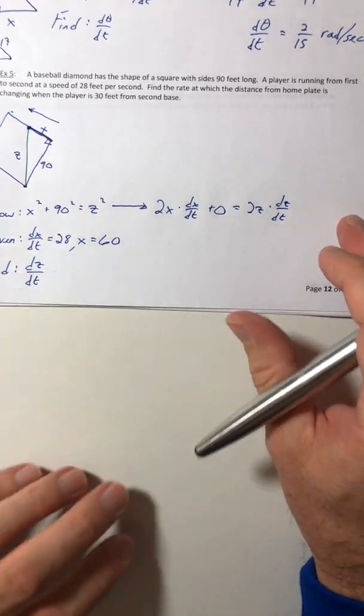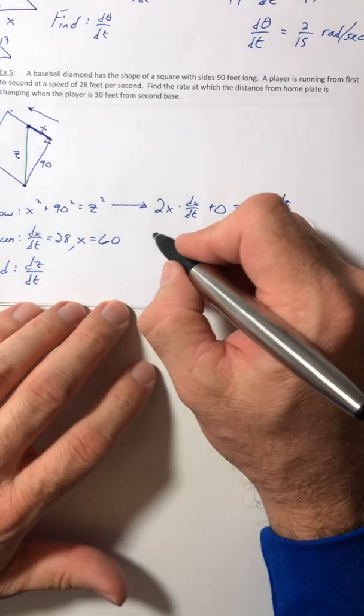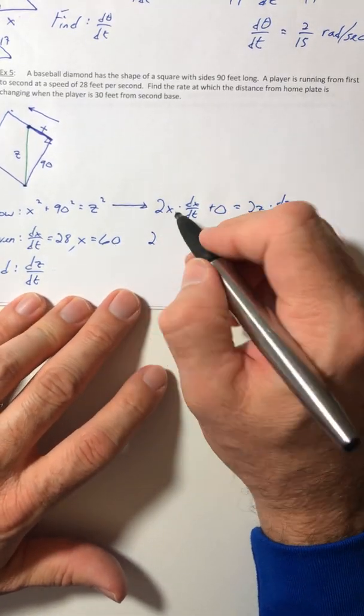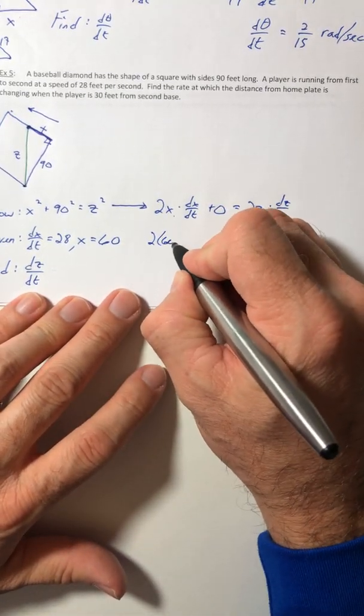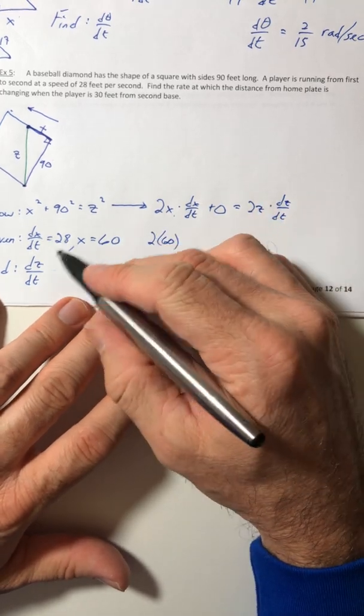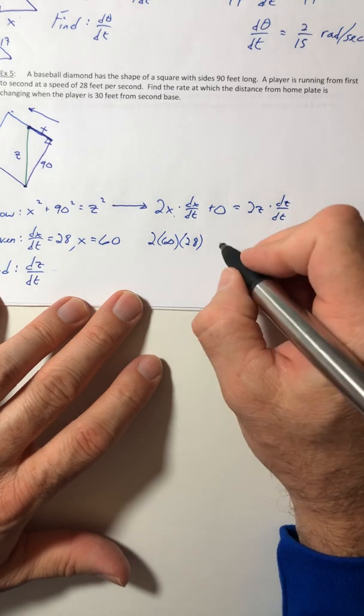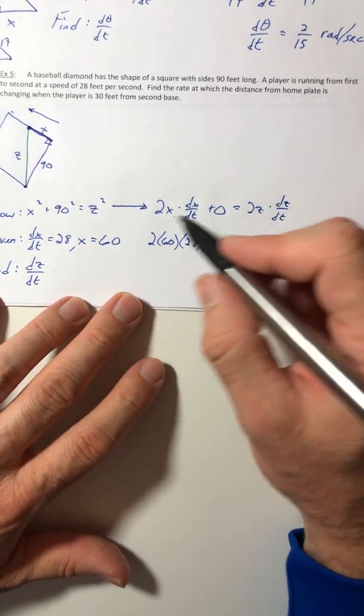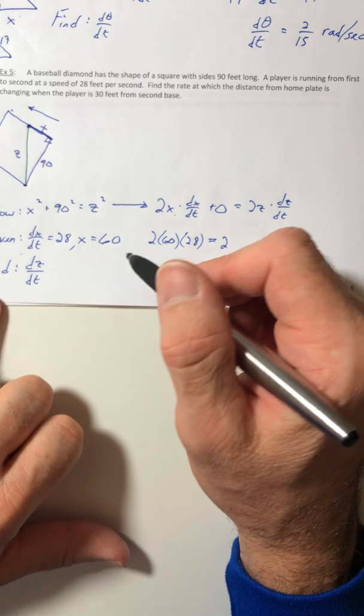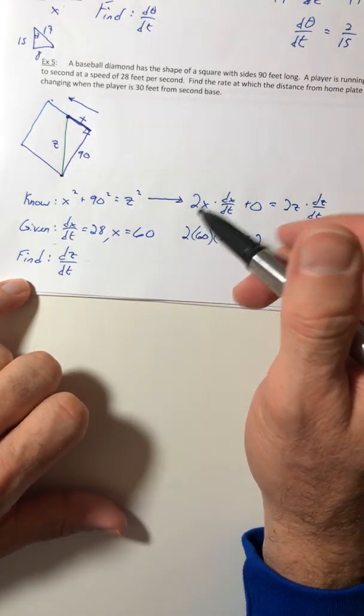So let's start plugging in what we have. We know X is 60, DX DT is 28. Delete the 0. The Z is, oh, they didn't give me Z.